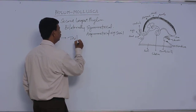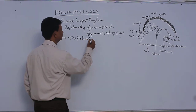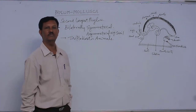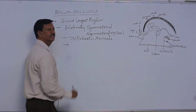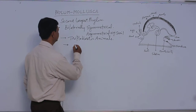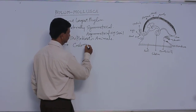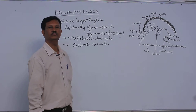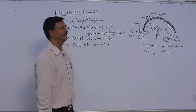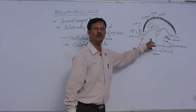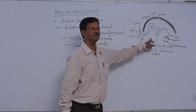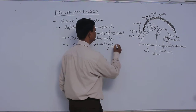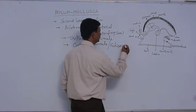They are triploblastic animals, with the presence of three primary germ layers: ectoderm, endoderm, and mesoderm. The coelom is present between the alimentary canal and body wall, and various visceral organs are found in the body cavity. Although the coelom is reduced, true coelom is present, and this is known as the schizocoelous type.